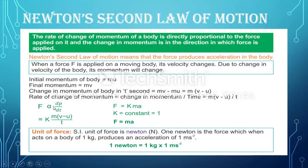From the second law, force is directly proportional to the rate of change of momentum divided by time. When we replace the proportional symbol with an equals sign, we introduce a constant k. So force equals k times m times a, and if we take k equal to 1, then force equals mass times acceleration — F = ma.